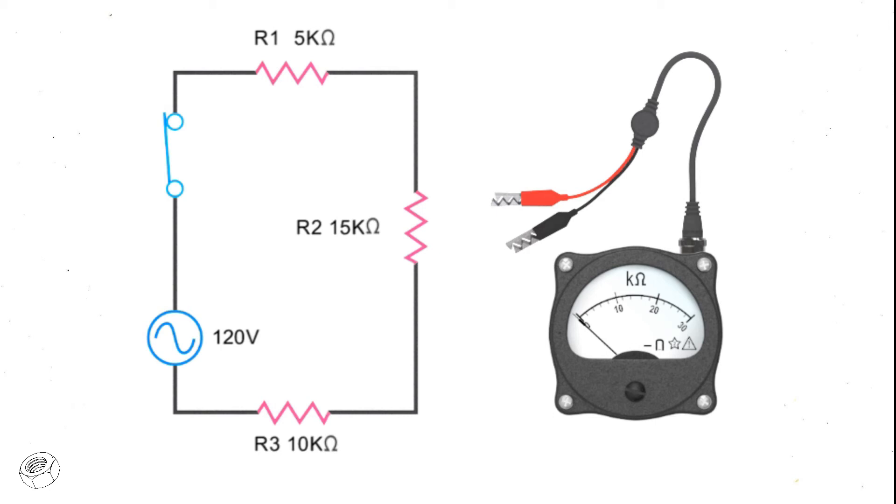Ohmmeters are never to be used in a powered circuit. It can damage the meter as well as present a safety hazard. So make sure switches are open before applying the leads of an ohmmeter to a circuit.